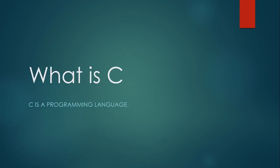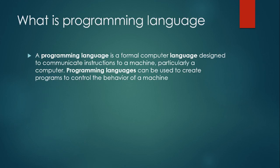Hello friends. In this video tutorial we discuss about C — what is C. C is a programming language. The next question is: what is a programming language? A programming language is a formal computer language designed to communicate instructions to a machine, particularly a computer. A programming language can be used to create programs to control the behavior of a machine.